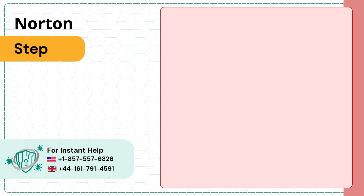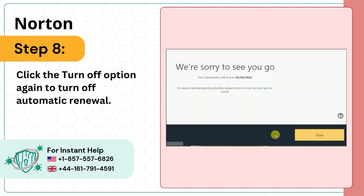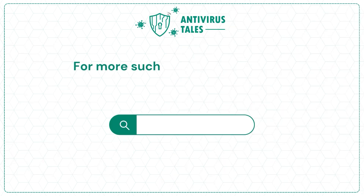Step 8: Click the Turn Off option again to turn off Automatic Renewal. For more such help and information,